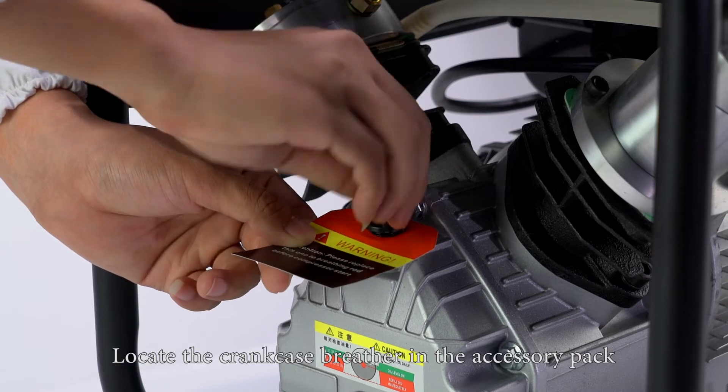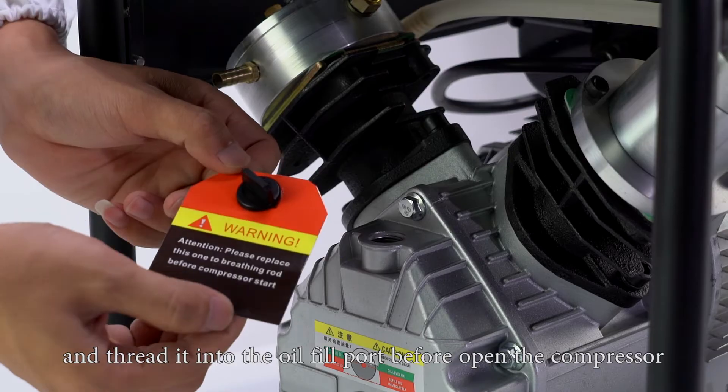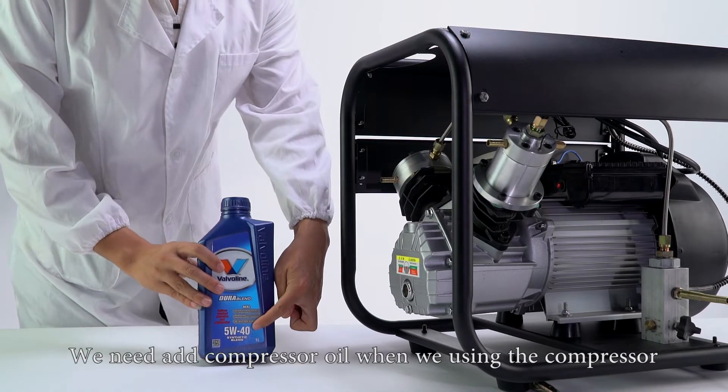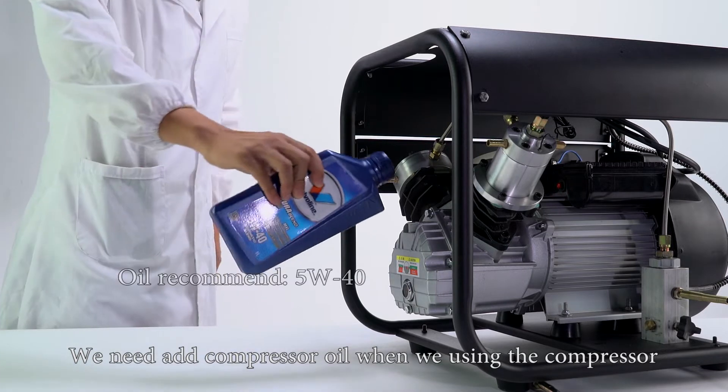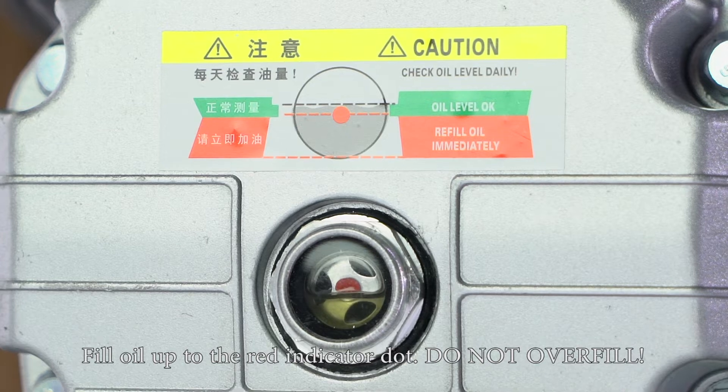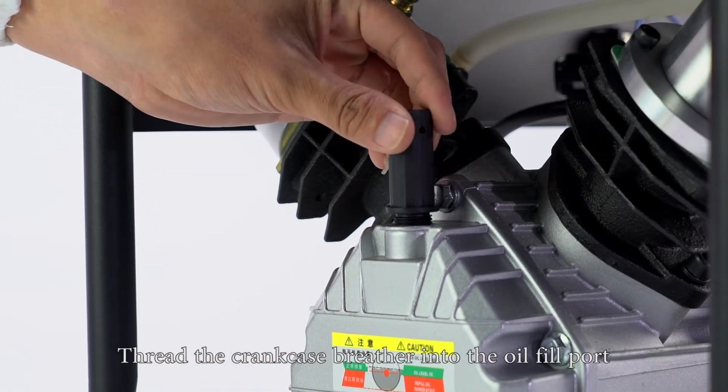Locate the crankcase breather in the accessory pack and thread it into the oil fill port before opening the compressor. We need to add compressor oil when using the compressor. Recommended oil is 5W-40. Fill oil up to the red indicator dot. Do not overfill. Thread the crankcase breather into the oil fill port.